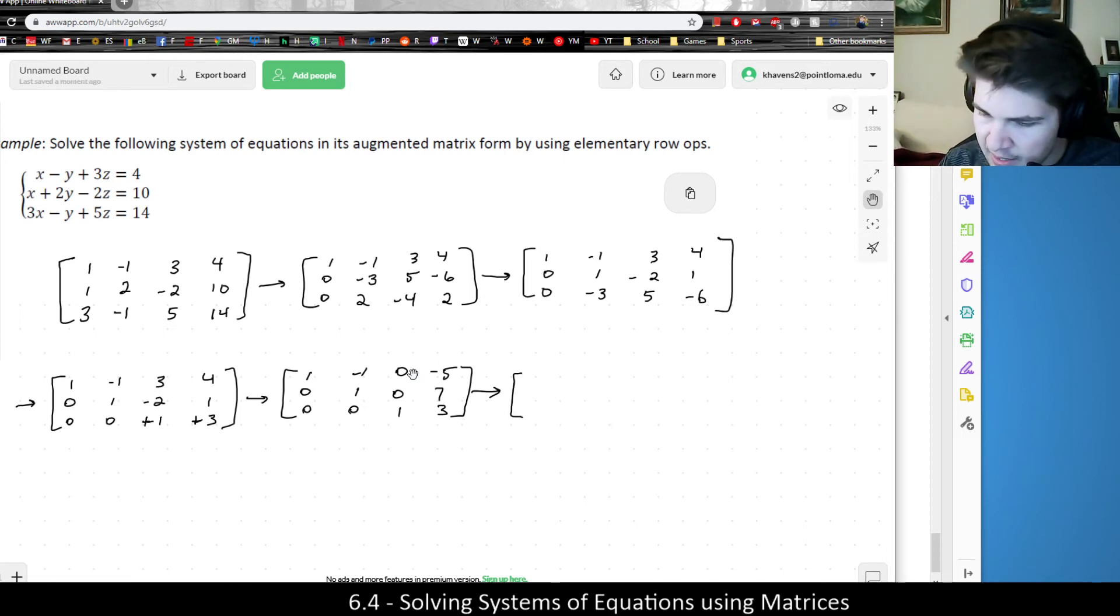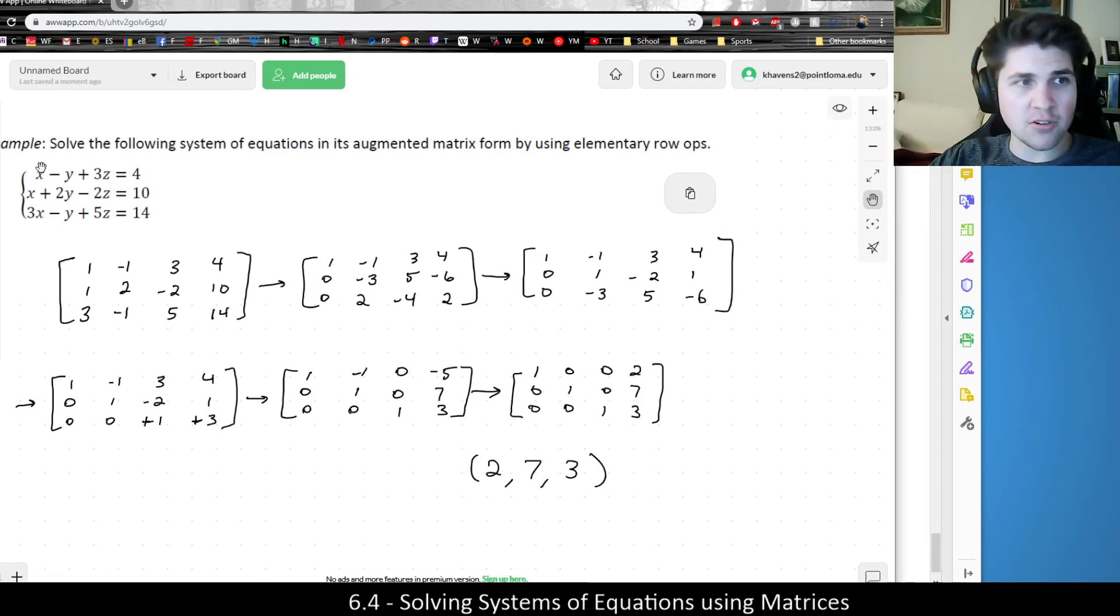And if I do that, I'm going to leave these two rows the same because those have been solved already. Now I would get zero plus one is zero. One plus negative one is zero. Zero plus zero is zero. And seven plus negative five is two. And assuming I did not mess anything up in there, I would have my system now solved in reduced row echelon form, which would give me the answers x, y, z. Hence the answer to my system.